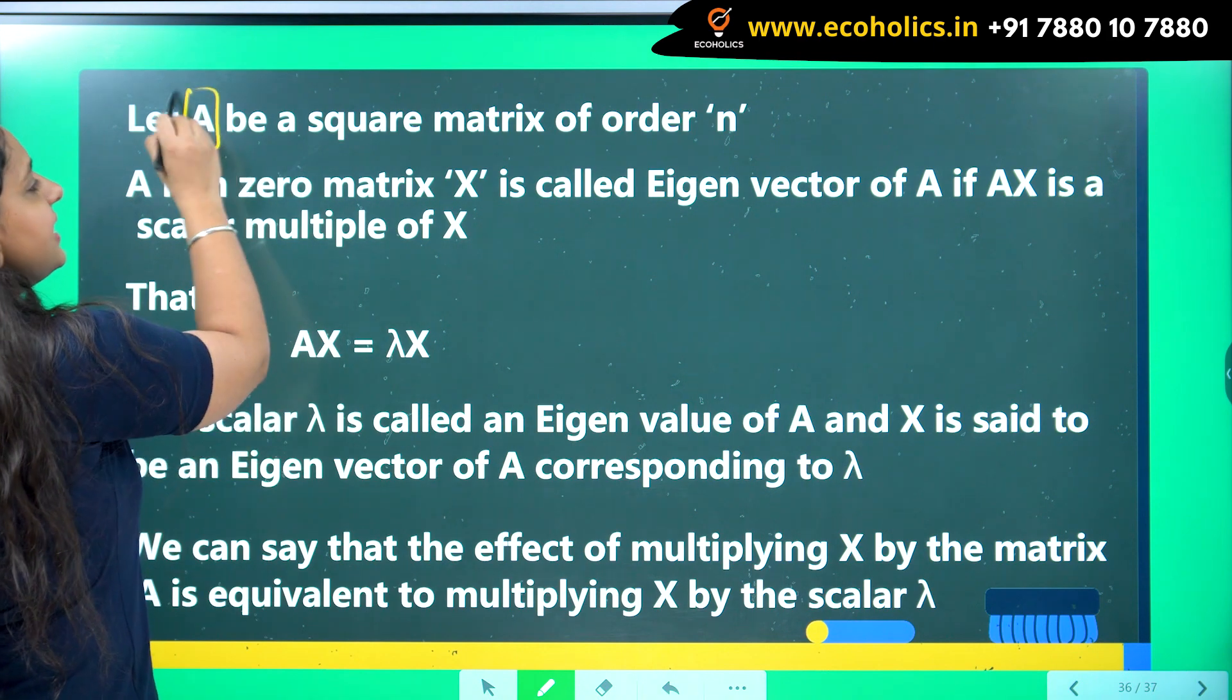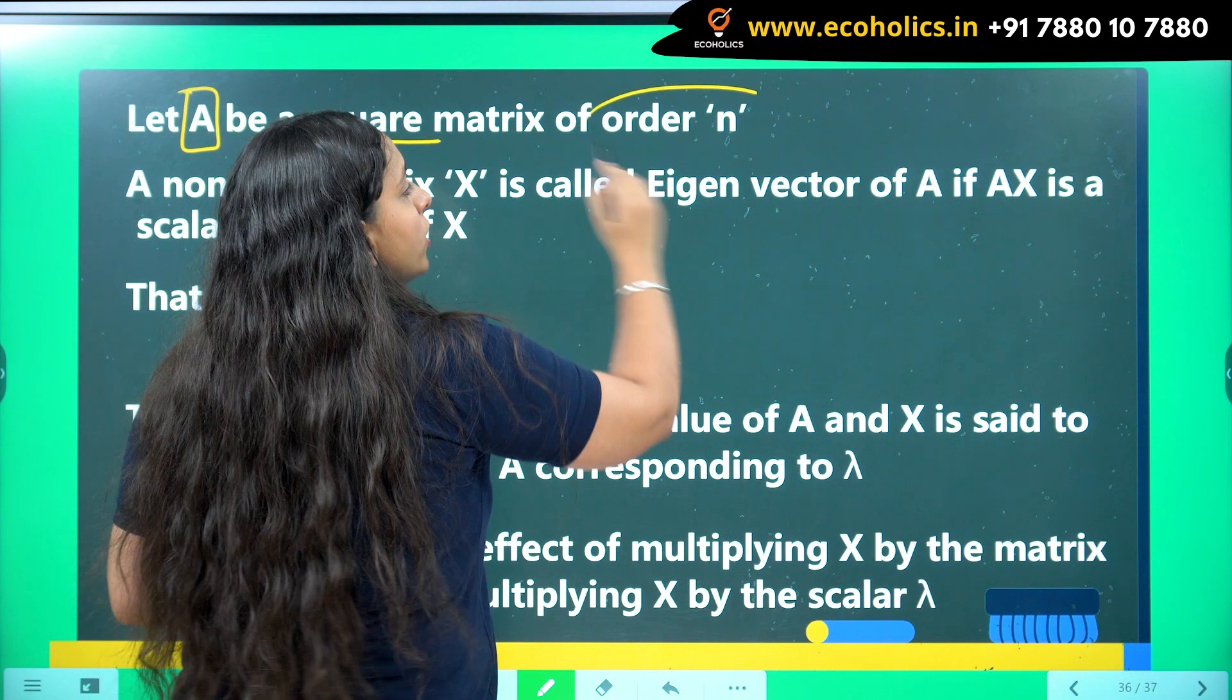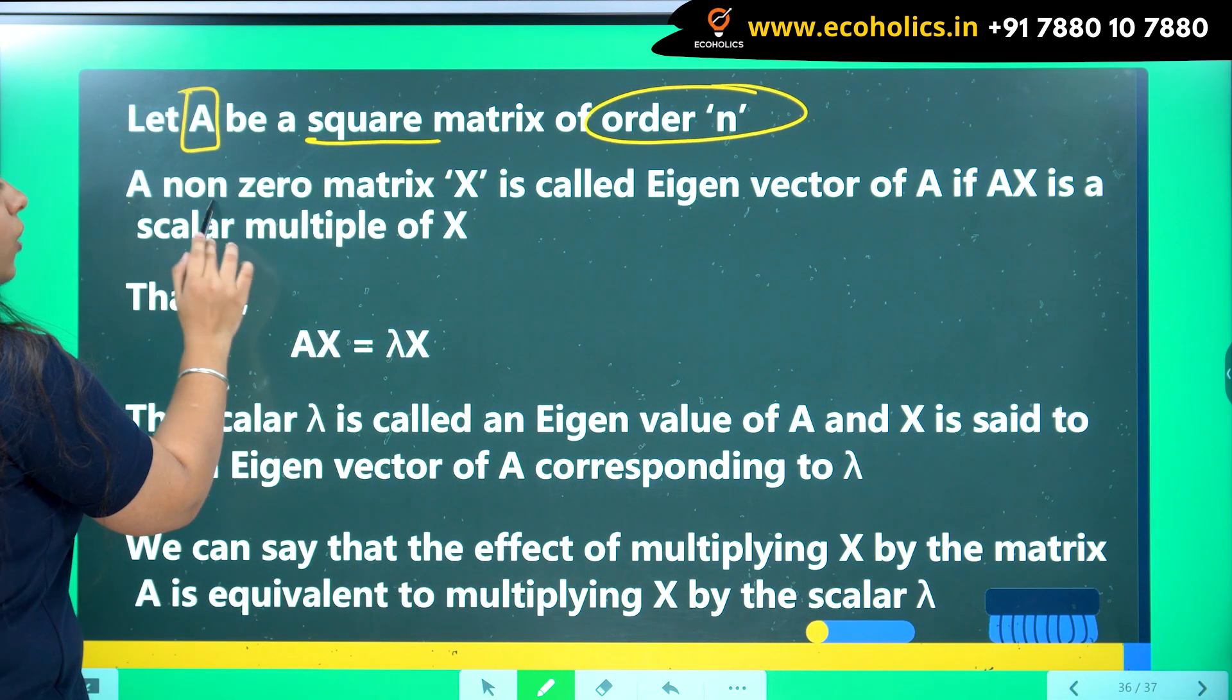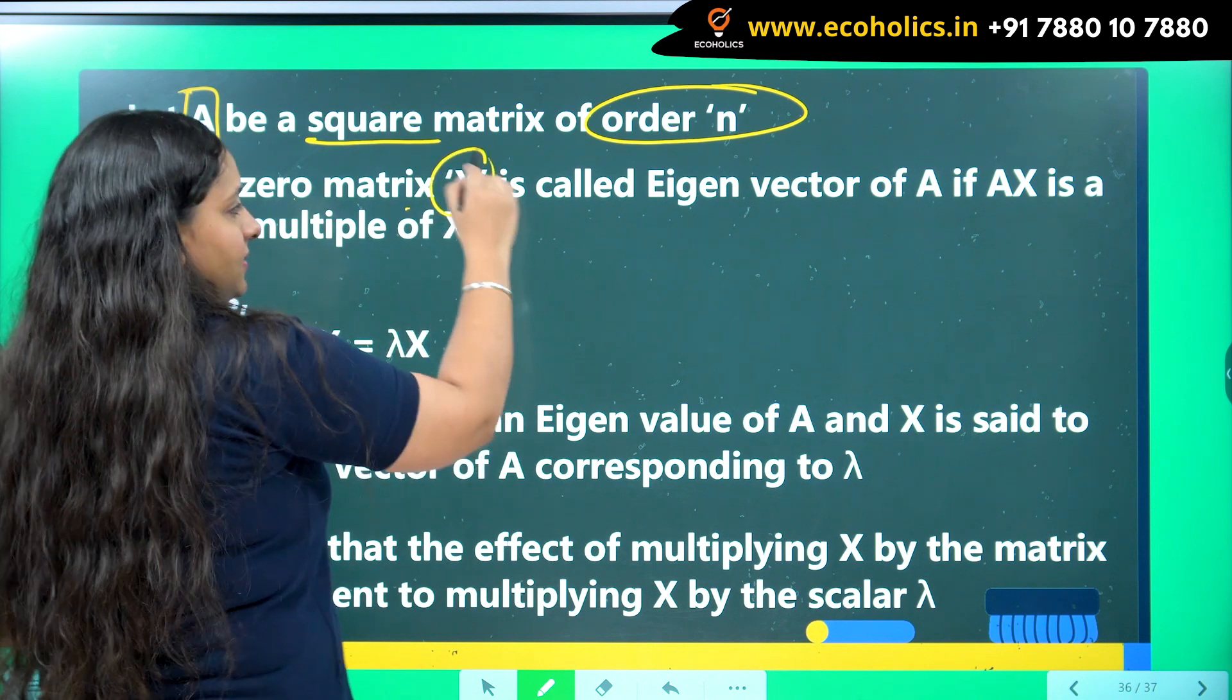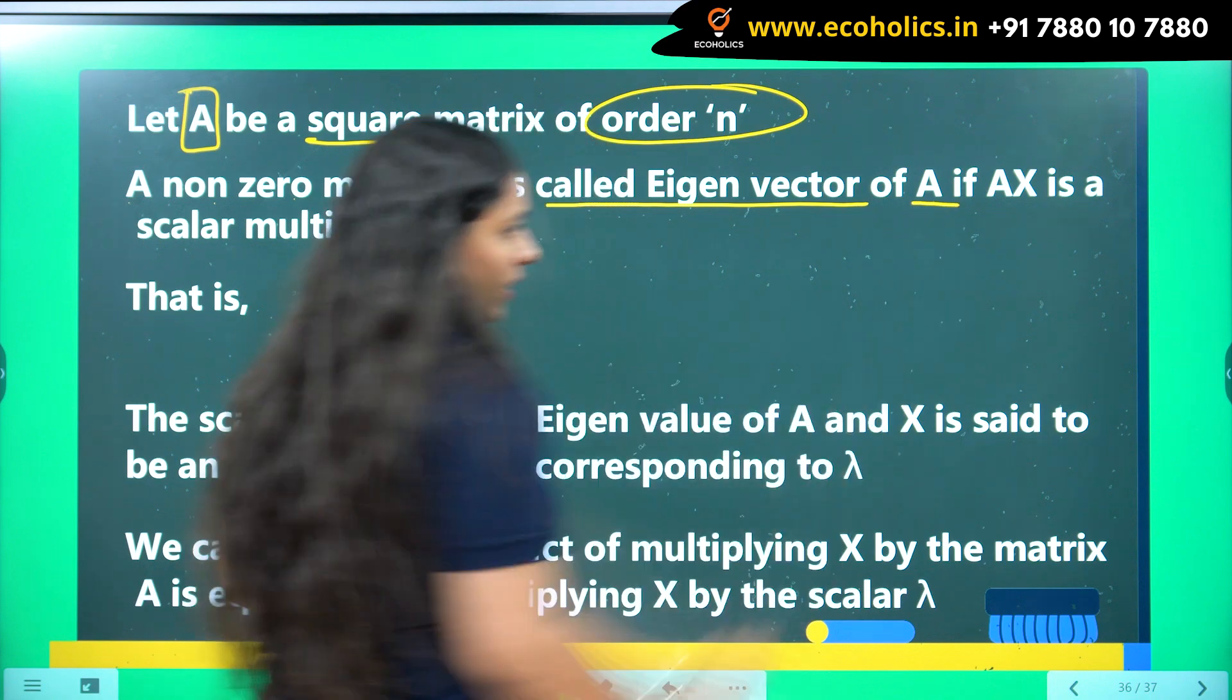So let us say A is a matrix which is going to be a square matrix and the order of A matrix is n. So a non-zero matrix X which you will call as your eigenvector is called eigenvector of A.